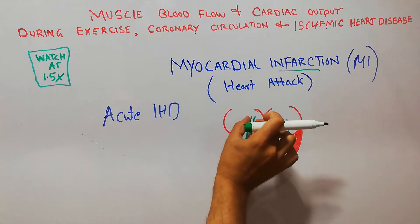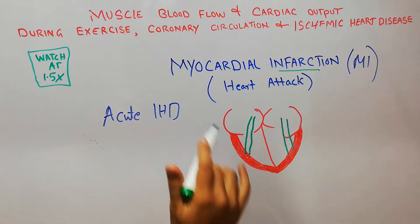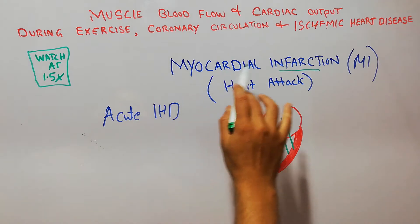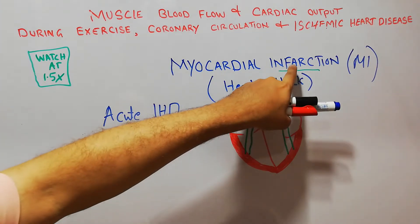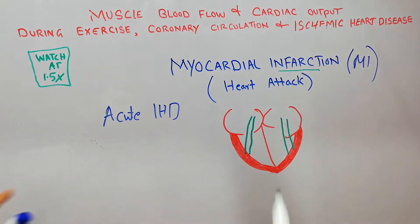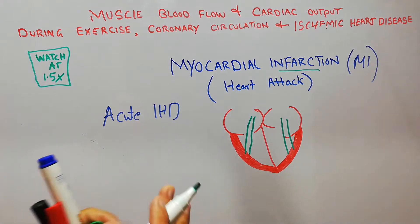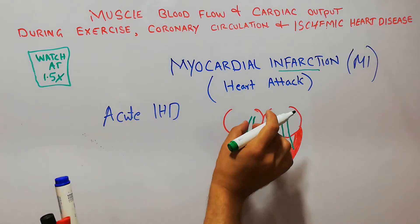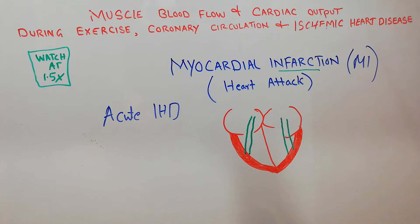A simple decrease in blood flow to the heart muscles will not cause myocardial infarction, because infarction means death — specifically, death due to obstruction of the blood vessels through which blood is not reaching the muscles.